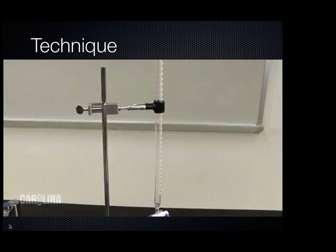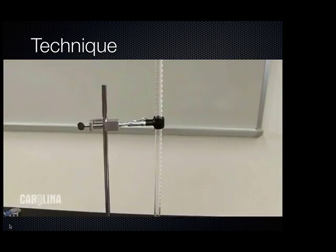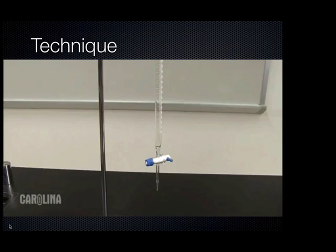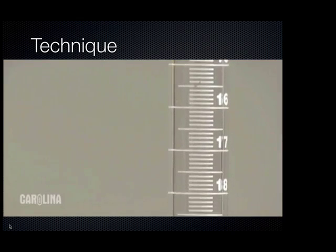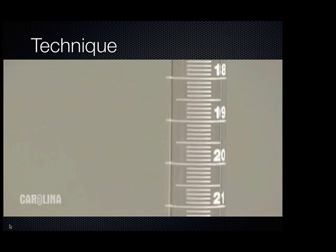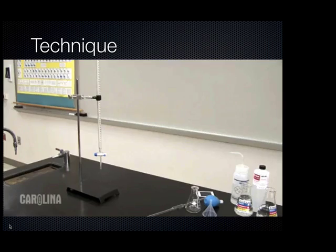A burette is a long, narrow, graduated tube used to add titrant. It has a stopcock to regulate the flow of liquid. Notice that the markings on the burette go from lowest at the top to highest at the bottom. The ring stand and burette clamp are used to mount and secure your burette.